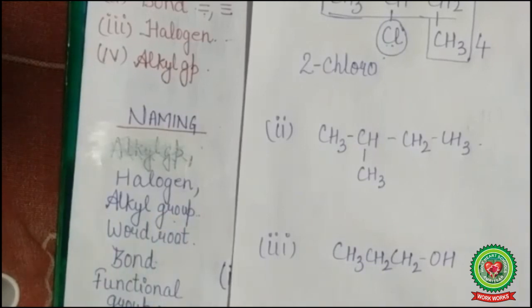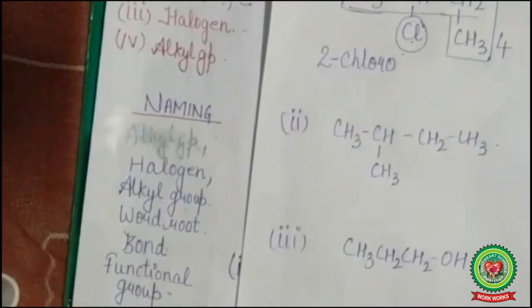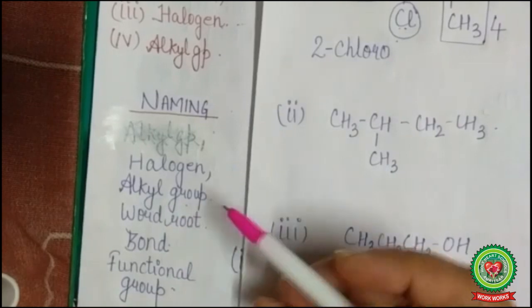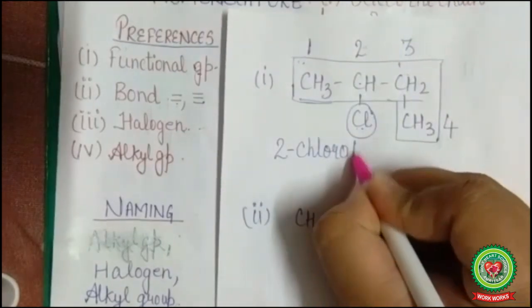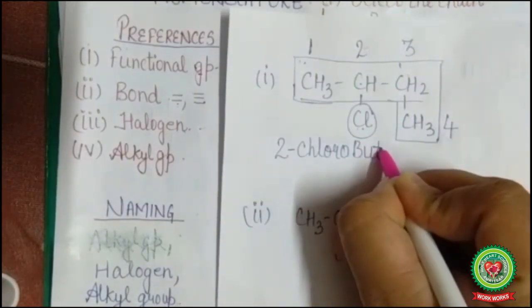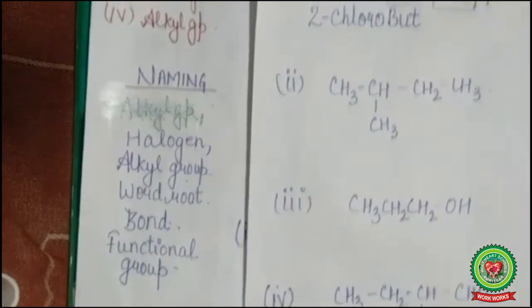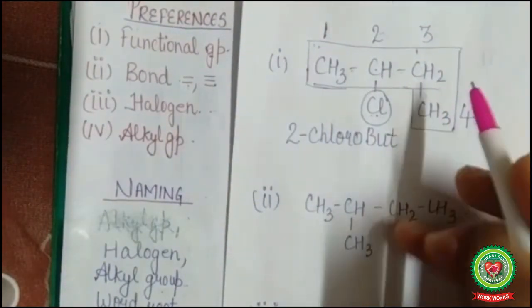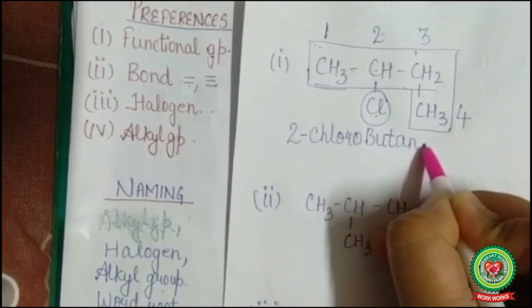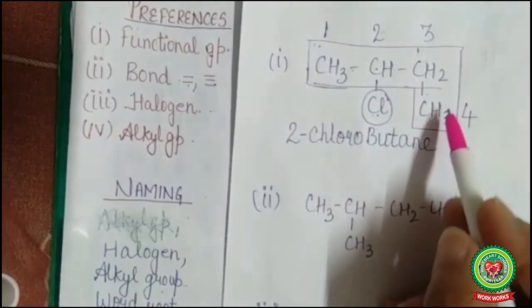After halogen, the next thing to write is alkyl group — there is no alkyl group in this structure. After that, word root: how many carbons are there? Four carbons, so we write 'but'. After word root comes bond — there is single bond between all carbons, so we write 'ane'. There is no functional group, so the name of the compound is 2-chlorobutane.